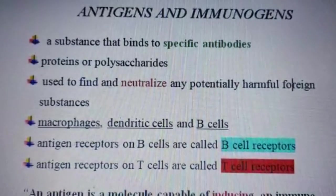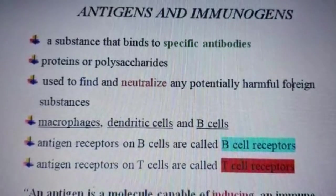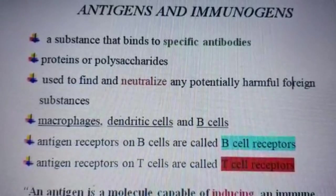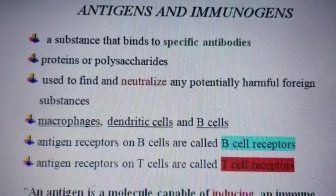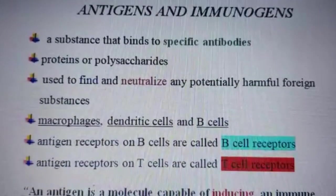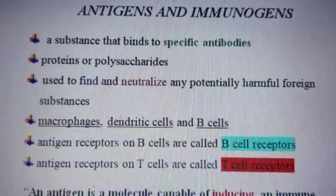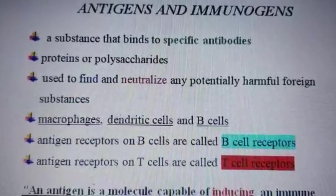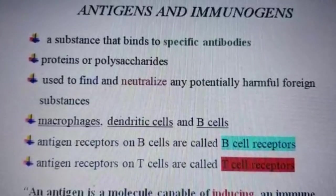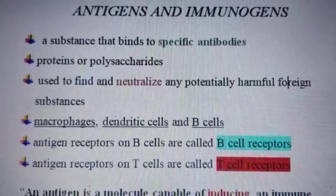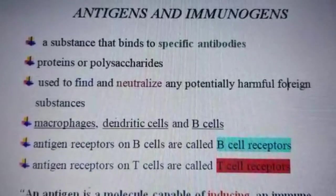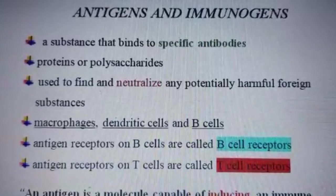Hello friends, you are watching the YouTube channel Online Biology Lectures 2020. My today's topic is antigens and immunogens. The immune system plays a role in providing resistance against infection by identifying foreign particles like toxins or any kind of infection. The immune system keeps the record of every germ it has ever defeated so it can recognize and destroy it again.